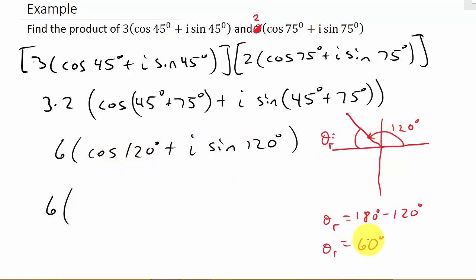So now I can use the reference angle. So remember, the cosine of 60 is 1/2. Now, that's the cosine of 60, but we're looking for the cosine of 120. Well, 120 is in the second quadrant, so cosine is negative.